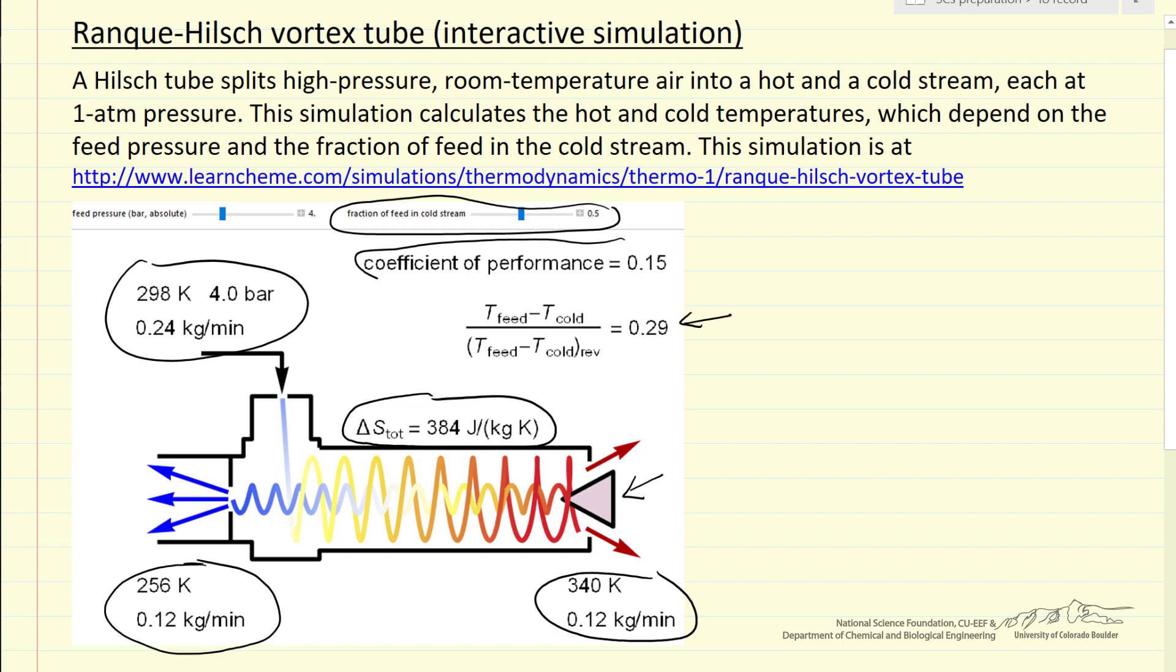The coefficient of performance takes that into account, so it multiplies this efficiency by the fraction, which is 0.5, so two significant figures, 0.5 is half of 0.29. The other way of looking at this coefficient of performance, it's how much cooling we can accomplish with this cold air from the Hilsch tube versus how much cooling if we cooled all of the gas from an adiabatic reversible expansion.